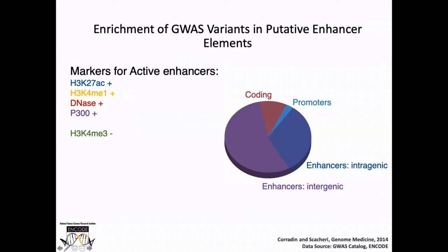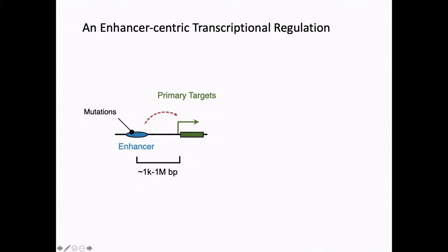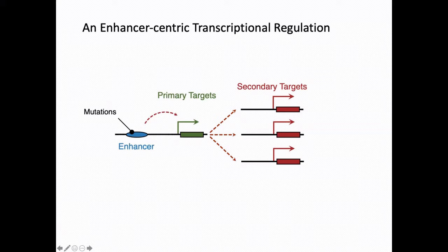However, for most of the enhancers we have identified, we don't have a functional understanding of them. Most enhancer studies are quite descriptive and based on correlation analysis, so it's really important to actually perform functional studies. One feature that complicates this problem is that enhancers do not locate right next to their target genes. Instead, enhancers often regulate genes located at distances ranging from 1 KB to about 1 megabase. Therefore, if the primary target genes directly regulated by an enhancer happen to be transcription factors, you will also see secondary target genes throughout the genome. So to fully understand the mechanism of mutations located on an enhancer, you have to be able to identify both primary and secondary targets.